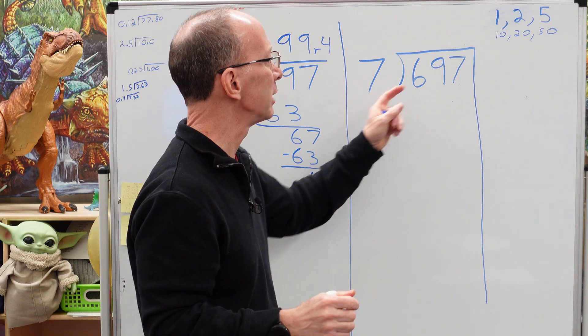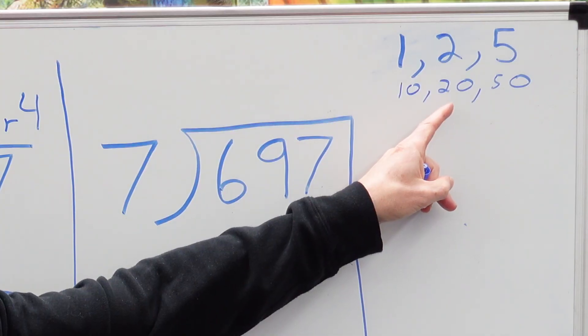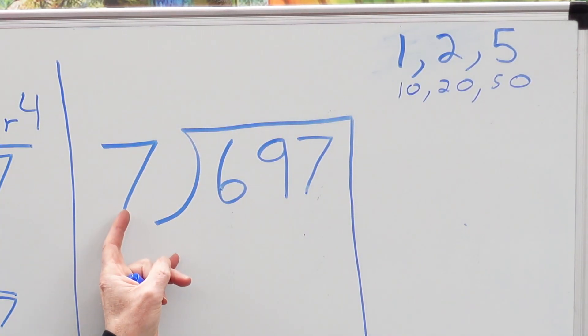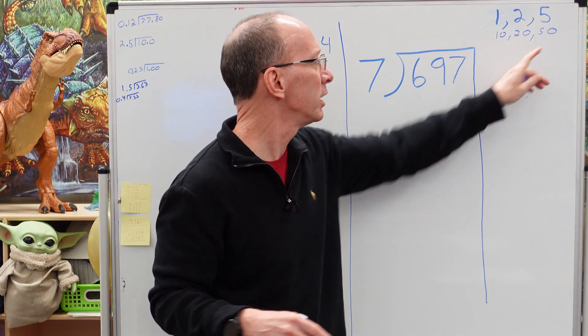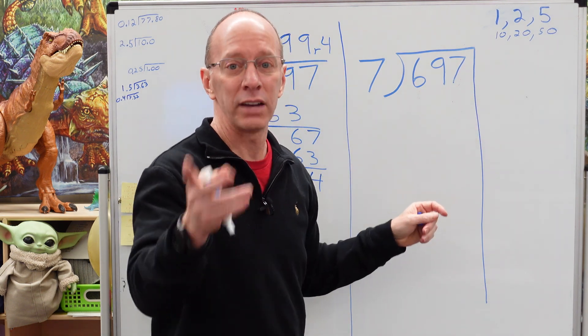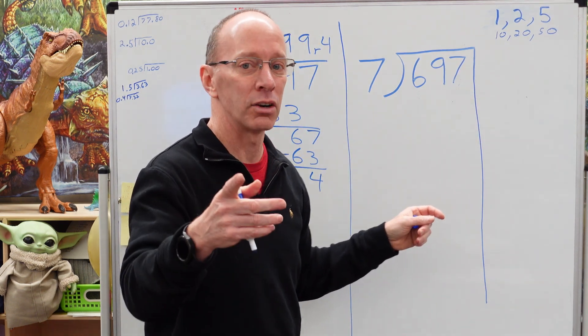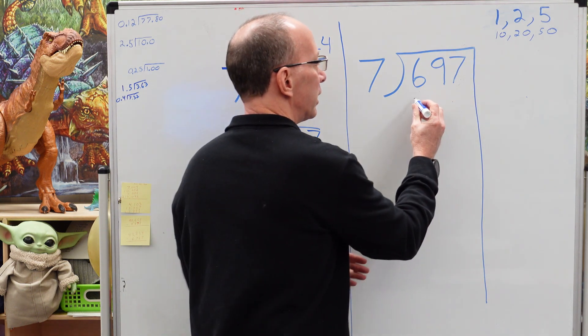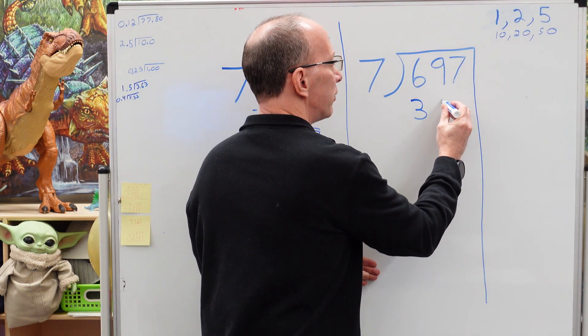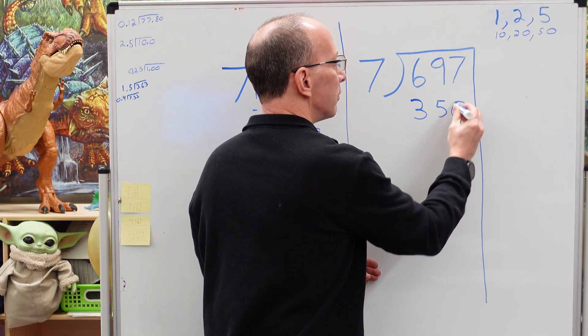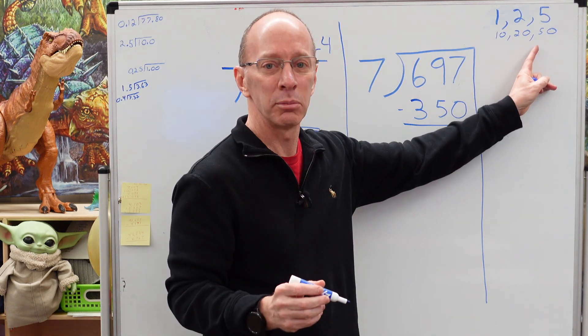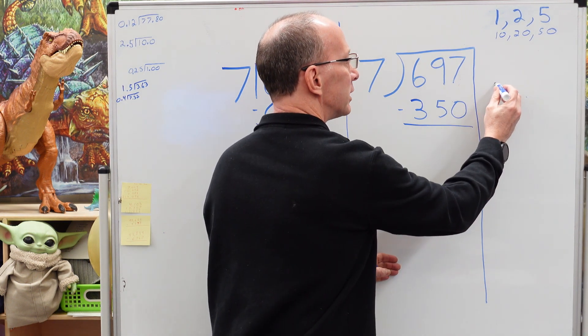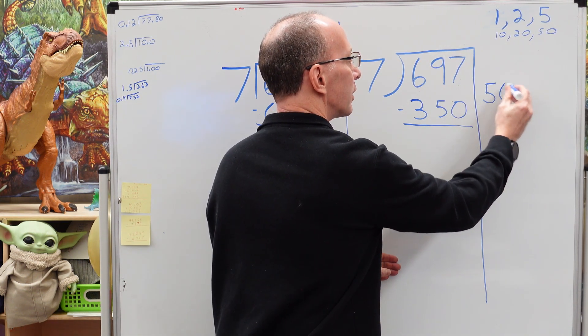So I need to figure out how many times I can take one of these numbers right here times this number and come to a close number. I think our first number would be probably 50. Alright. So what is 50 times seven? So five times seven is 35. Add the zero and that would be 350. So I'm going to go ahead and put 350 right here. And I'm going to subtract that. Now I use the number 50 and I want to put 50 right to the side here.